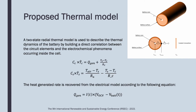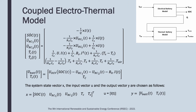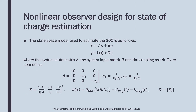A two-state radial thermal model is used to describe the thermal dynamics of the battery. The state-space model used to estimate the state is as follows: the derivative of x is equal to A times x plus B times u; y is equal to the function h plus D times u, where the system state matrix A, the system input matrix B, and the coupling matrix D are defined as follows.